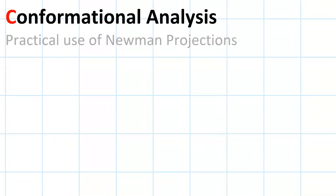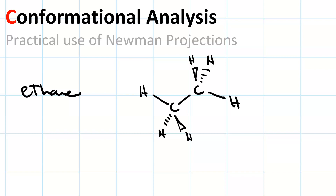Conformational analysis is a great application for Newman projections. Let's consider ethane. In this conformation of ethane, the torsion angle between every set of hydrogens is 180 degrees — each hydrogen points in the opposite direction from the one on the other carbon. When you have those 180-degree torsion angles, we're talking about a staggered conformation.